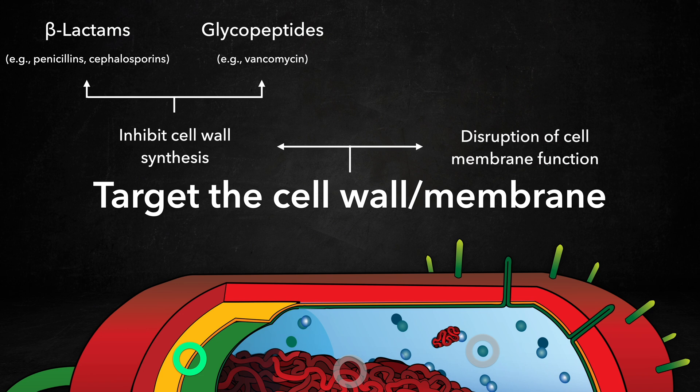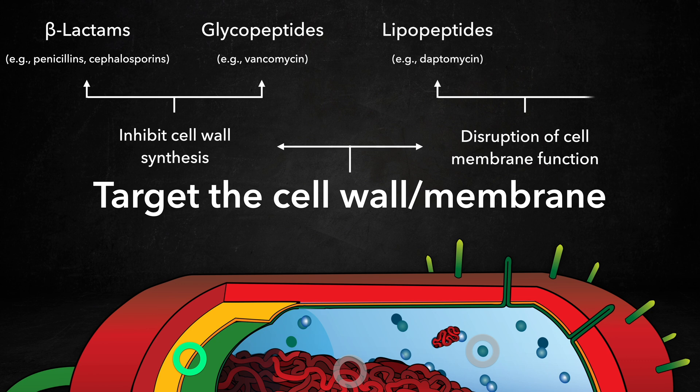The second subgroup includes antibiotics that disrupt function of the cell membrane, including lipopeptides, such as daptomycin, and polymyxins, such as colistin.